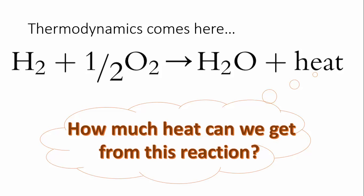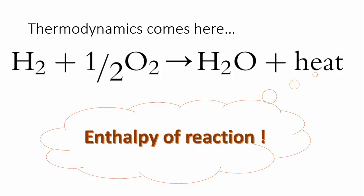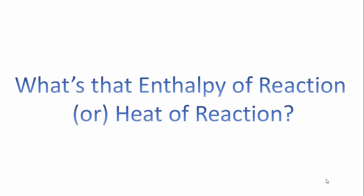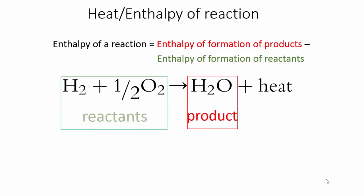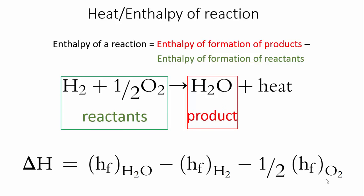Probably you would ask, how do I calculate the enthalpy of reaction? It's just the difference between the enthalpy of formation of products and reactants. Please don't confuse the terms enthalpy of reaction and enthalpy of formation. In our reaction, H2O is the product; H2 and O2 are the reactants. Hence, enthalpy of the reaction is equal to enthalpy of formation of H2O minus enthalpy of formation of H2 minus enthalpy of formation of O2.